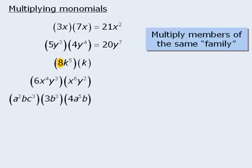In the next example, we have a coefficient of 8 in one term, but the other term does not have a coefficient. In these instances, the coefficient is assumed to be 1, in which case 8 times 1 is equal to 8. Next, we will multiply k to the power of 5 by k to get k to the power of 6.